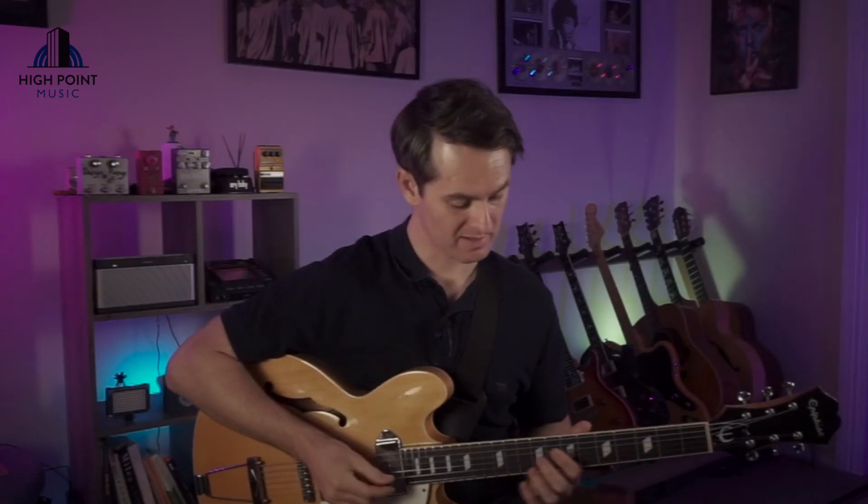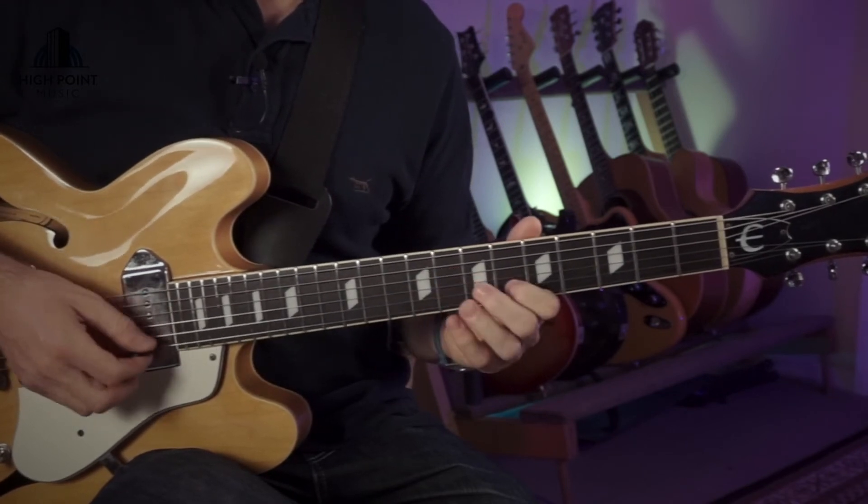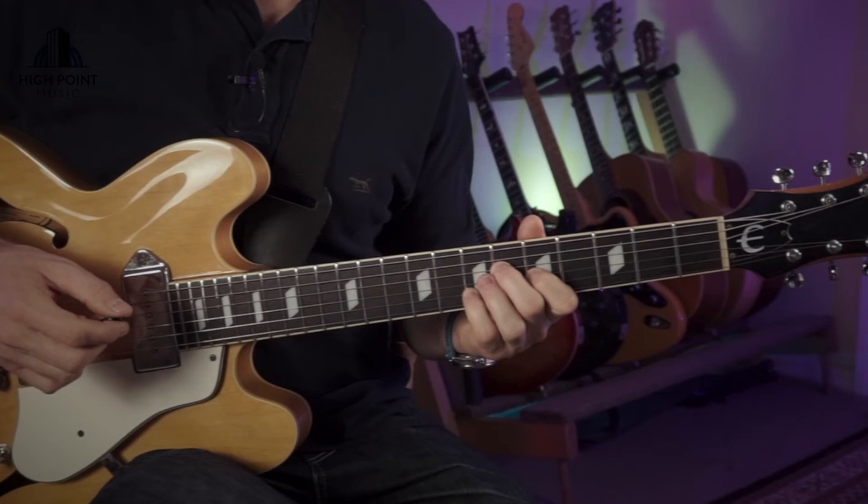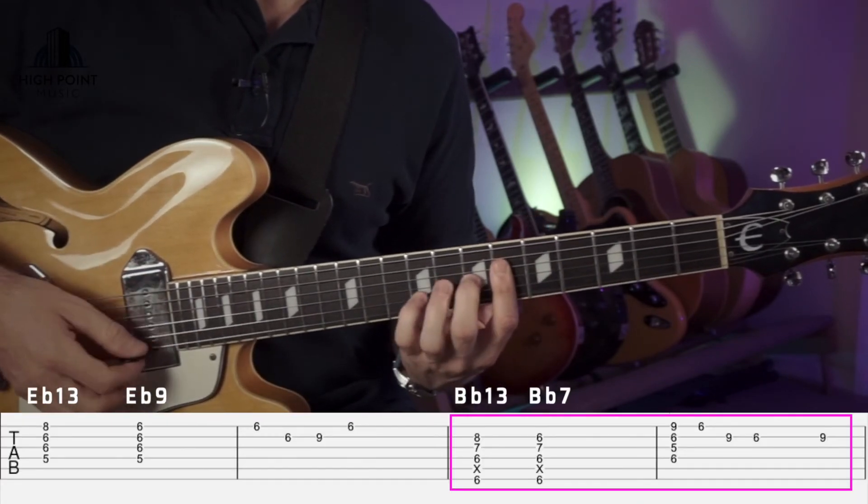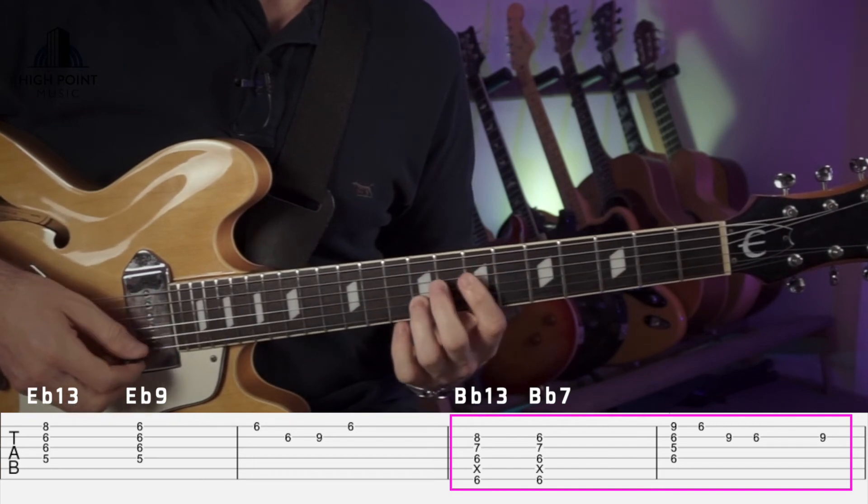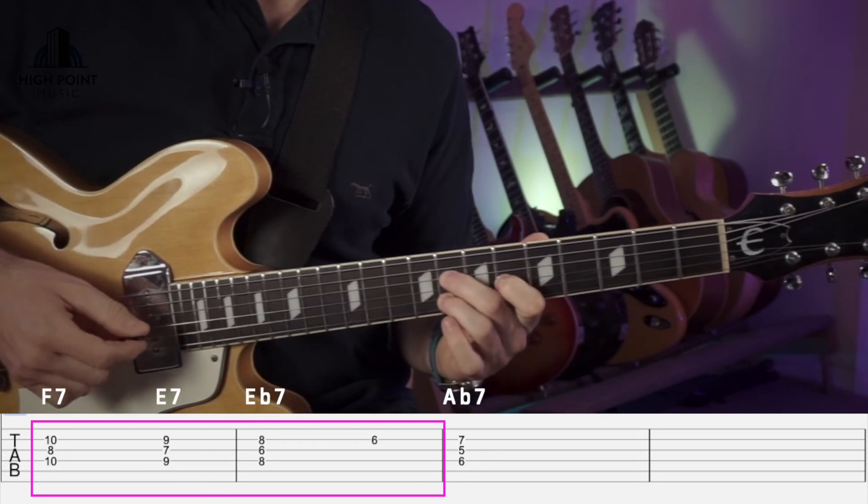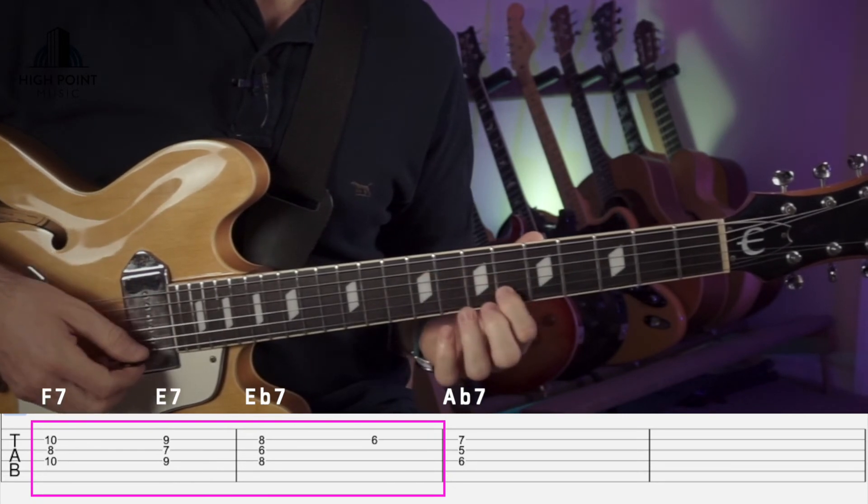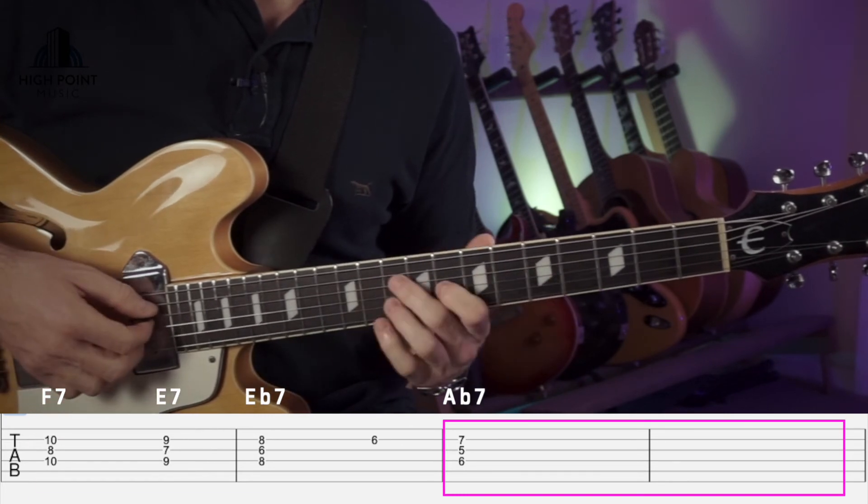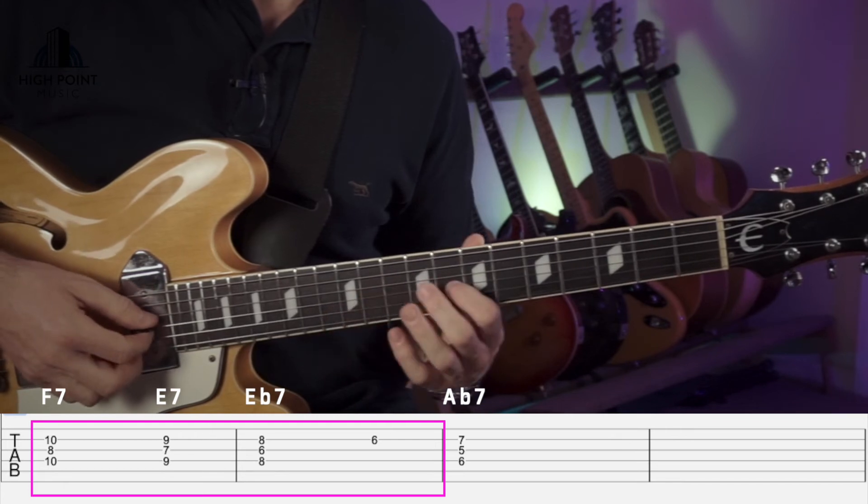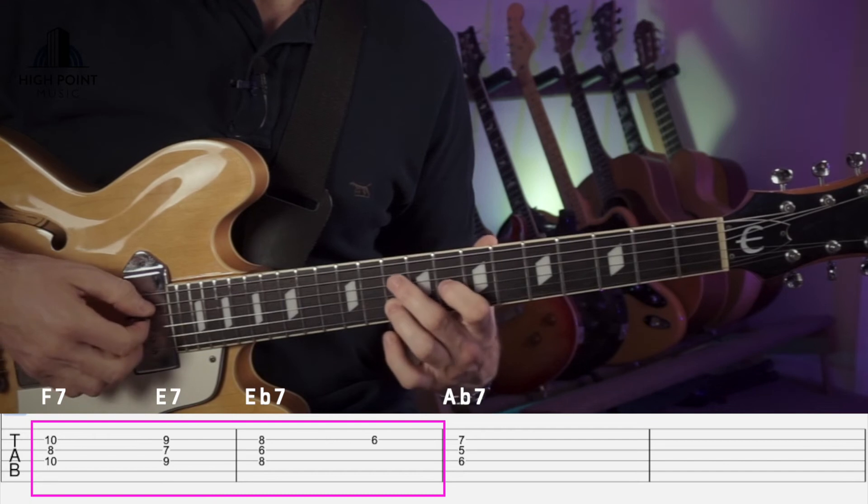So for the last little section of our run, here we go, two, two, three, to an Ab there. So we might take this one in context from our last little run, and then our Ab to this F7 voicing here, chromatically moving it down, and then our first finger on the sixth fret to an Ab7 there. So that F7 voicing is just second finger here on the tenth fret, first finger on the eighth fret, third finger on the tenth there.